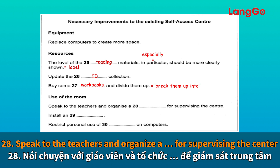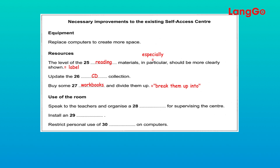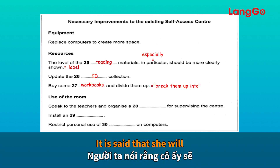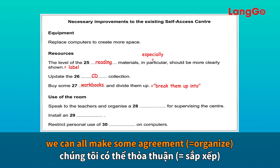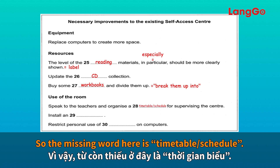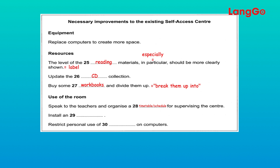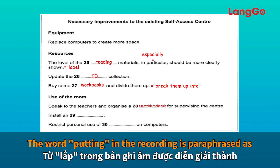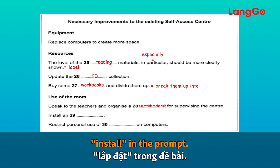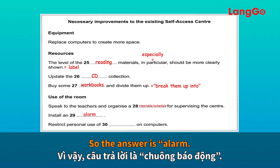Number 28: speak to the teachers and organize for supervising the center — she'll have to talk to the teachers and make sure they can all reach some agreement on a timetable to supervise the center after class. The missing word is 'timetable.' Number 29: install — what about putting in an alarm? Good idea. 'Putting in' is paraphrased as 'install' in the prompt, so the answer is 'alarm.'